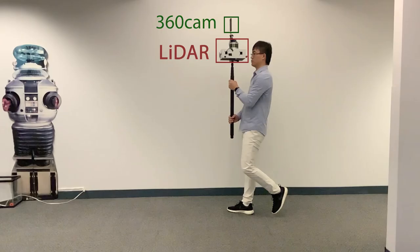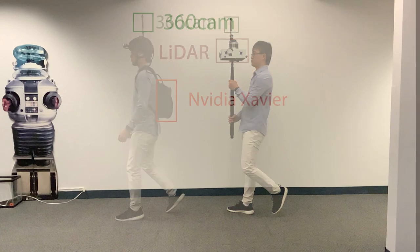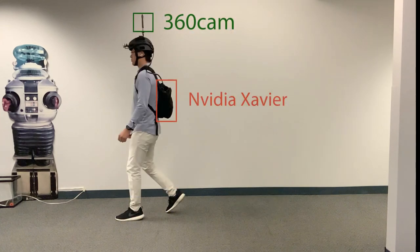We generate the point cloud map with the LiDAR device in the training step. In the inference time, we are only using 360 camera for localization on the outdoor exterior.